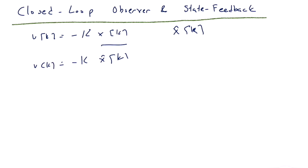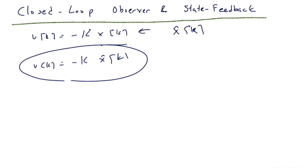The problem — or potential problem — is: what happens if we close the loop in this sense? We designed K under the assumption that we have direct state access, and it technically satisfies the performance criteria embedded into the system. But we don't know if it will work when we close the loop using the observer estimate. This is the topic of this lecture, so let's analyze it.